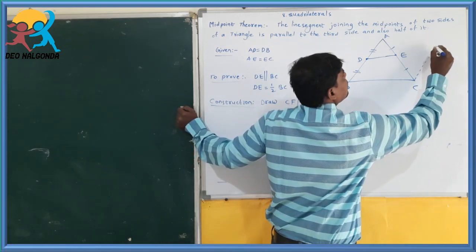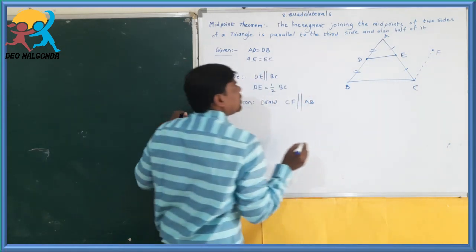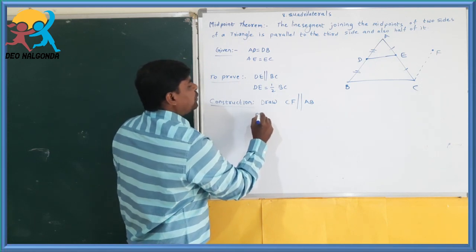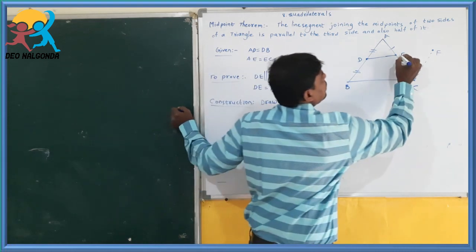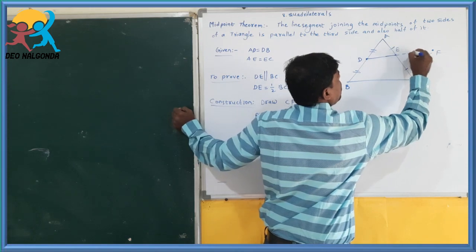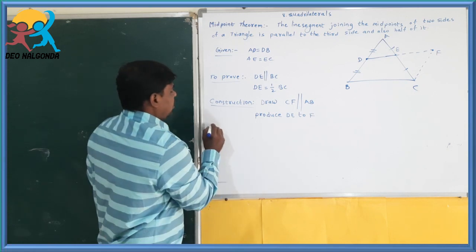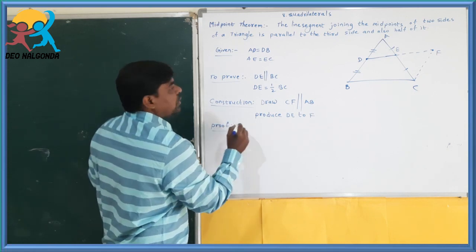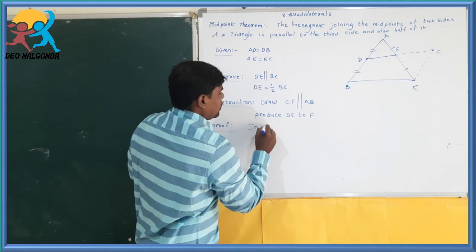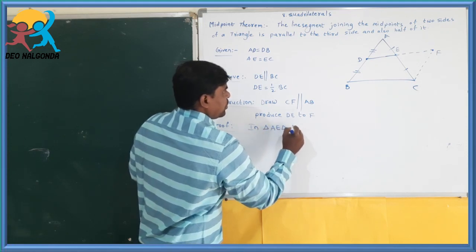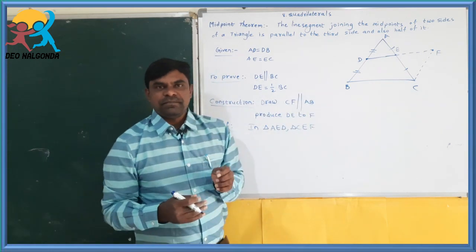We denote the line with dots up to F and produce DE to F like this. Now we get one more triangle — triangle CEF. Proof: select the two triangles AED and CEF.